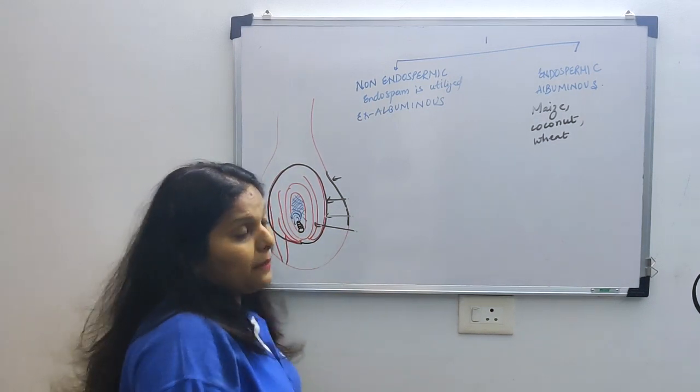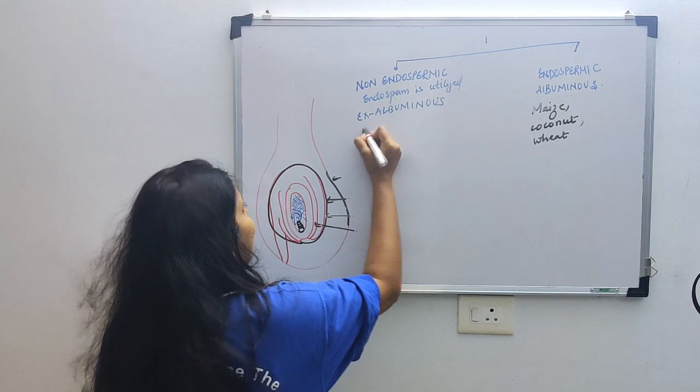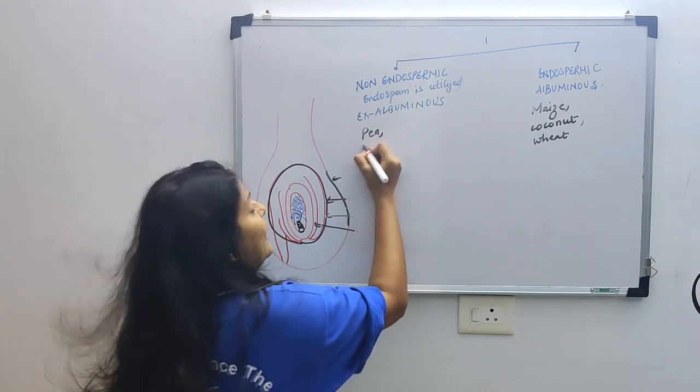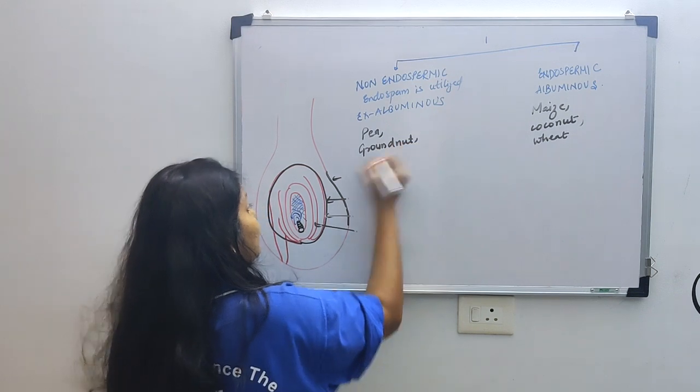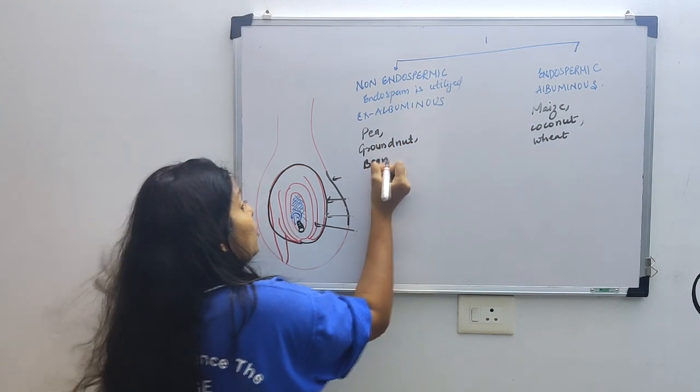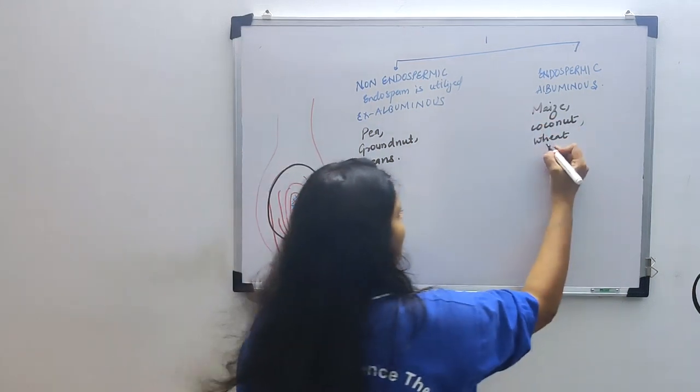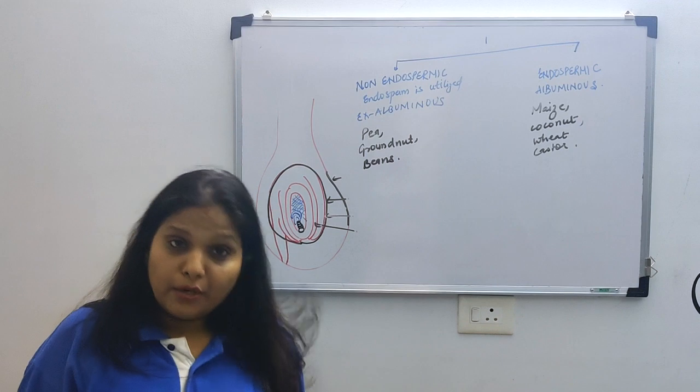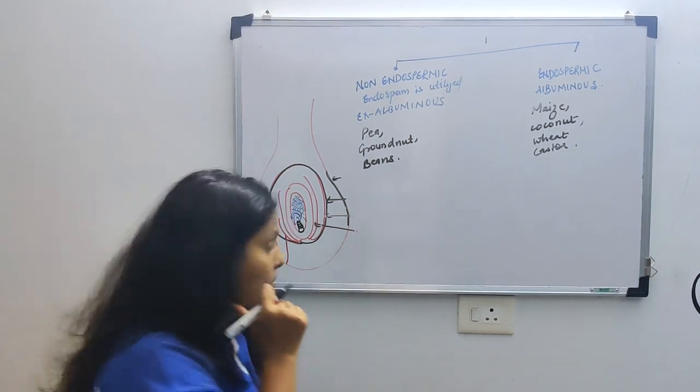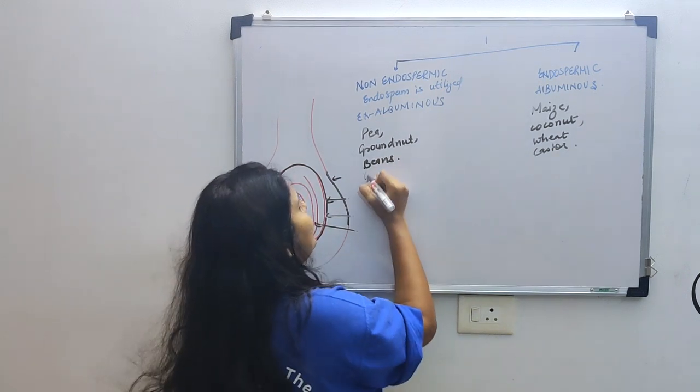Which ones are non-endospermic? Non-endospermic includes our peas, our groundnut, our beans. Whatever leguminous plants there are, in them endosperm gets completely used up. So here, maize, coconut, wheat, castor, etc. are endospermic. Now in non-endospermic, what happens? Pay attention. Take pea or gram, for example.